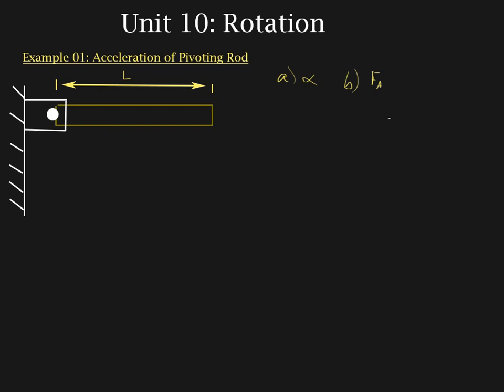Okay, so the first thing we need to do is identify our strategy for getting through this. And in part A, we're just looking at Newton's second law for rotation. So for part A, we're going to start with tau net is equal to I alpha.